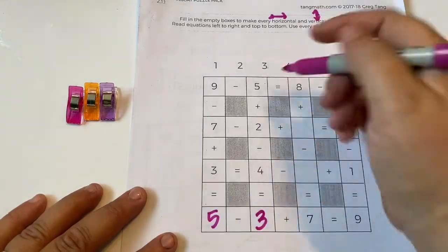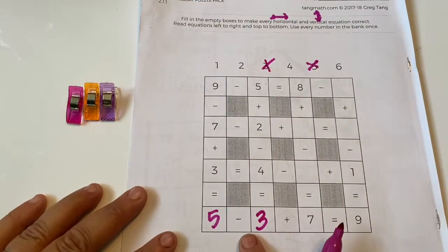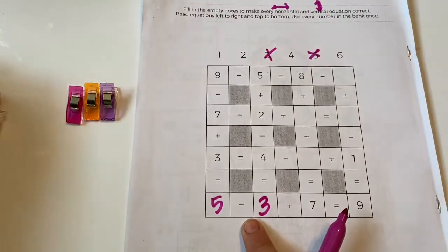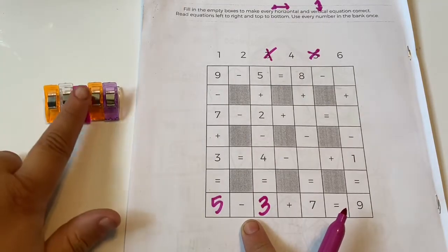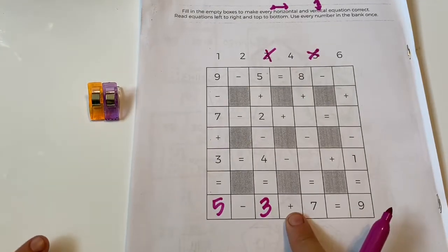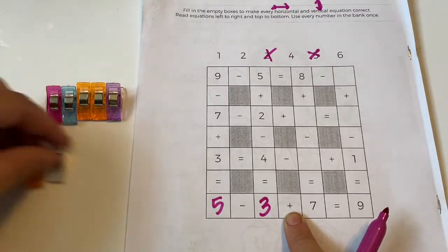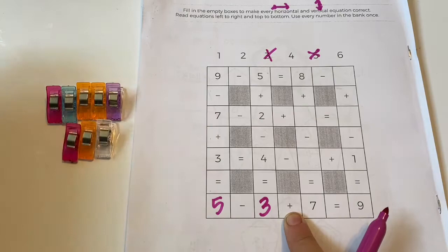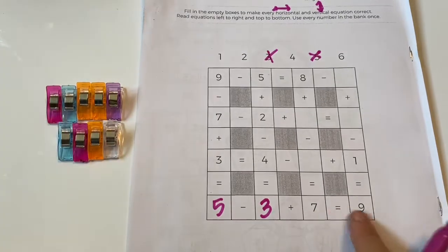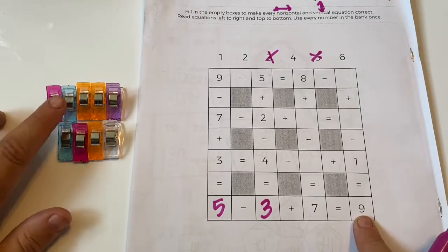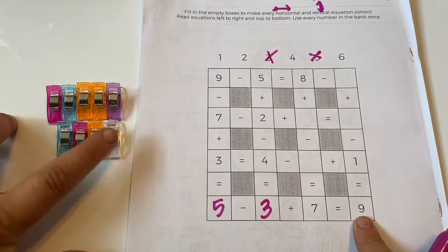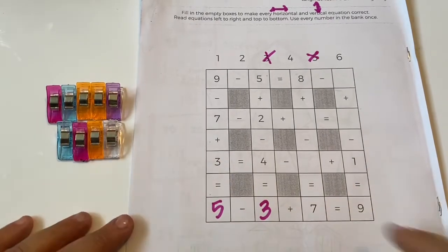So now this should be correct if we did it correct. Five minus three, here's my five, five minus three plus seven. One, two, three, four, five, six, seven equals nine. Let's see if we're correct. One, two, three, four, five, six, seven, eight, nine. Yep, that's correct.